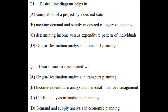Let us see some questions which have been asked in the GATE Architecture exam. Question number 1: Desire line diagram helps in — Option A: completion of a project by a desired date. Option B: meeting demand and supply in desired category of housing. Option C: determining income versus expenditure pattern of individuals. Option D: origin and destination analysis in transport planning. The correct option is D, origin and destination analysis in transport planning.